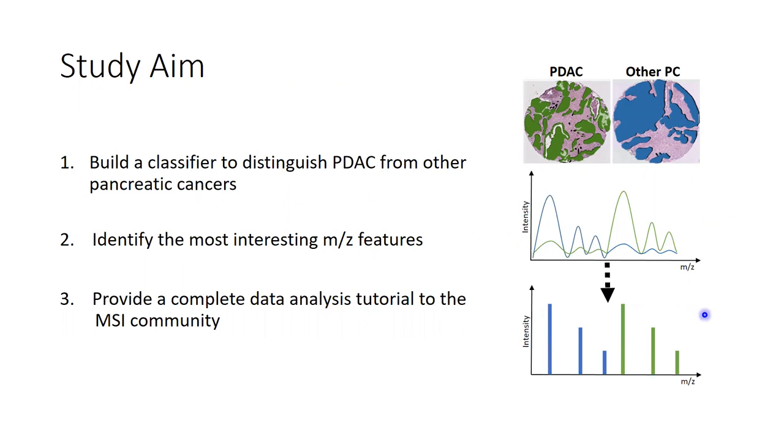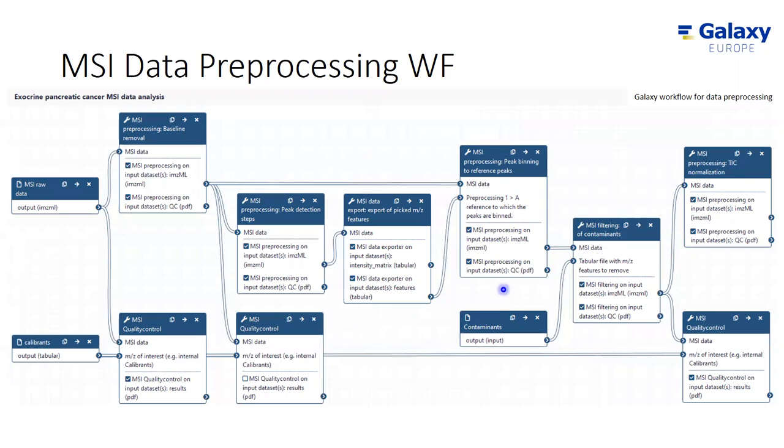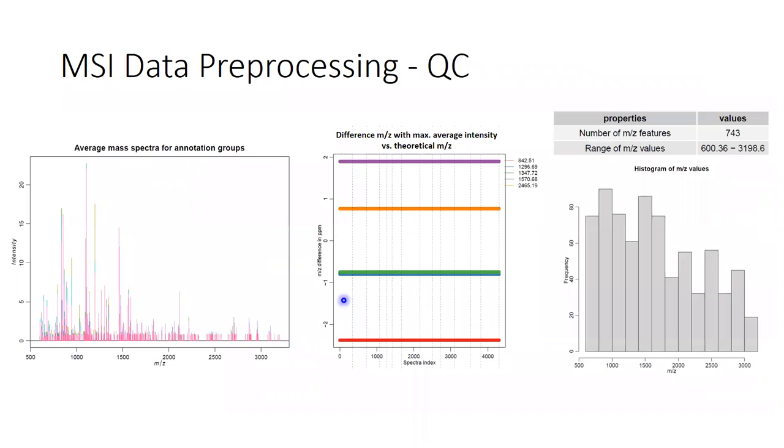The first step is the data preprocessing and kind of a reduction of the data that leads from the spectra to spectra with peaks. A complete preprocessing workflow consists of several steps, like baseline removal and smoothing or some peak detection steps, the removal of contaminants, and also intensity normalizations. Of course, we recommend to check the data after each step with a quality control tool. After the preprocessing, we get spectra that are reduced to a couple of hundreds of MSI features, here 743.